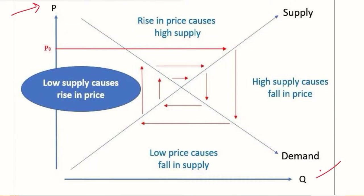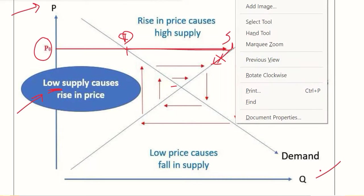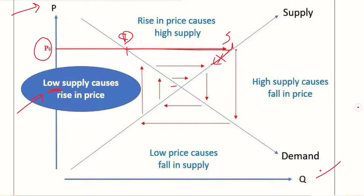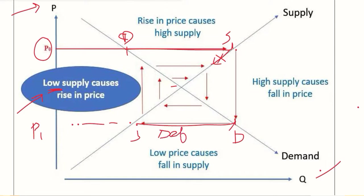In the demand and supply framework, equilibrium should occur at the intersection. But starting from a disequilibrium point like p0, supply is greater than demand, creating a surplus. When there is a surplus, the price falls — not smoothly along the curve but with a discrete jump, landing on the demand function at the next price level, for example p1. At p1, demand is greater than supply, creating a deficit.